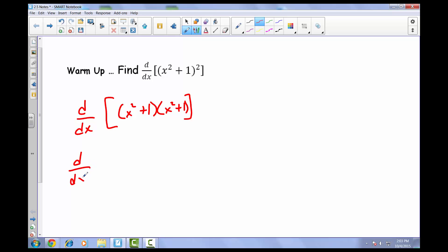So we have the derivative with respect to x of x squared times x squared gives us x to the 4th, plus x squared plus another x squared would give us 2x squareds, and then when we do our last for our FOIL, we end up with plus 1.